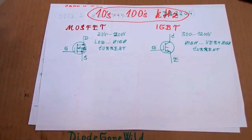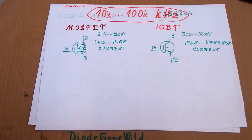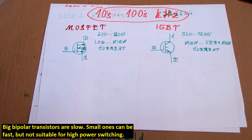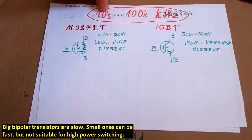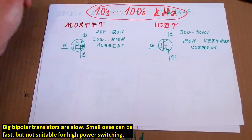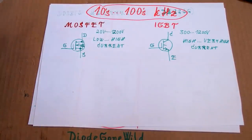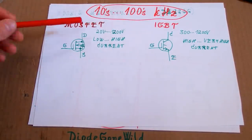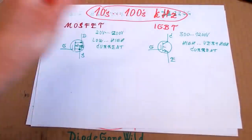There are also bipolar transistors but they are not very suitable for a solid state Tesla coil because they are usually too slow. A solid state Tesla coil is switching at about tens to hundreds of kilohertz, and bipolar transistors need quite a lot of current into their base. So for a solid state Tesla coil the choice is basically just MOSFETs or IGBT transistors.